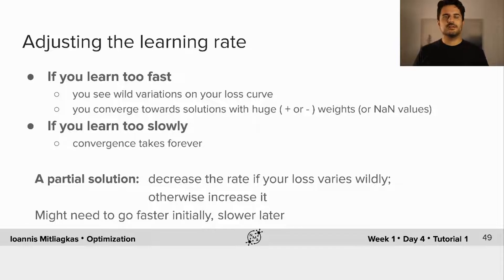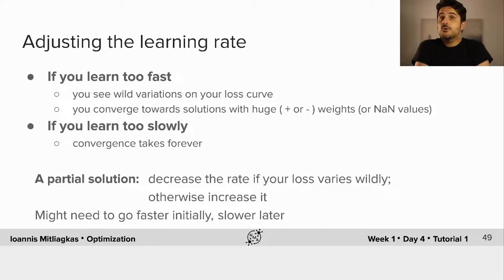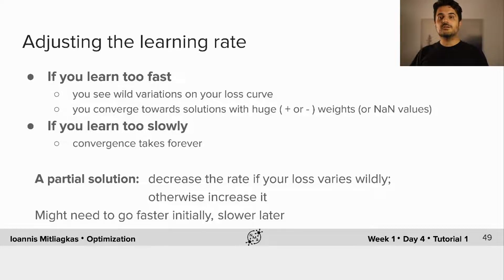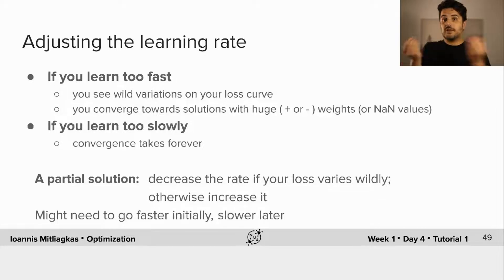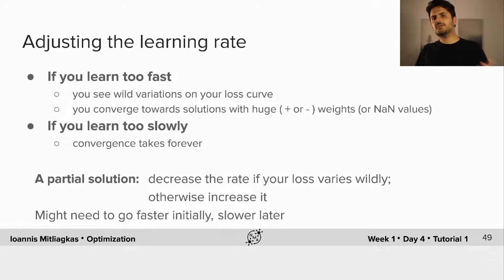How do we adjust the learning rate? If you're learning too fast, you might see wild variations in your loss curve — it might blow up or go up and down dramatically. You could converge towards solutions with huge weights, or even infinity or NaNs (not a number). If you're learning too slowly, convergence takes forever and your loss curve makes very little progress. The general rule of thumb is to decrease the rate if you see wild variations, and otherwise try increasing it.